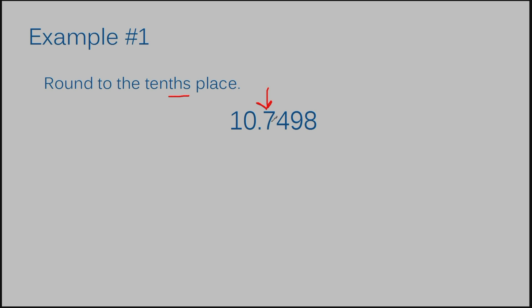If you remember the last slide, I explained that you check the number to the right. That means we're going to look at the four because it's directly to the right of the space that we're needing to round to. If that number — the four — is five or more, the place where we're rounding to will increase by one digit, so the seven would become an eight. But if the number to the right is four or less, the place where we are rounding to remains the same. In this case, our number directly to the right is a four, so it is in the category of being four or less.